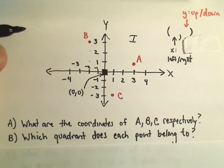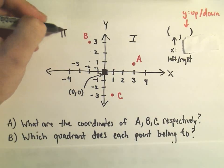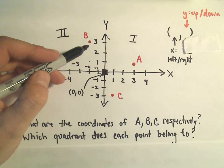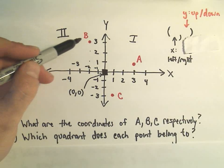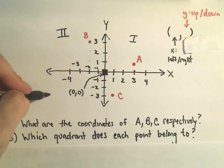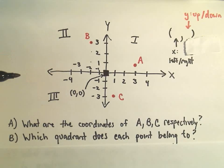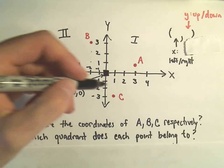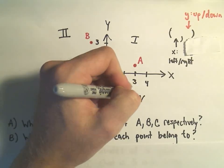So point A belongs to quadrant 1. Any point that falls in the top left, we say that belongs to quadrant 2. So point B belongs to quadrant 2. The bottom right is quadrant 3. Excuse me, the bottom left is quadrant 3. The bottom right is quadrant 4.